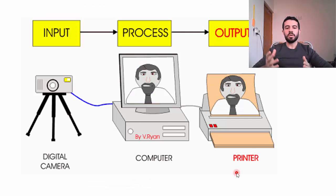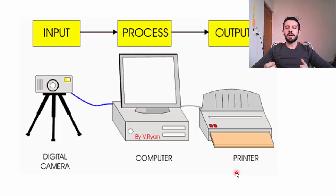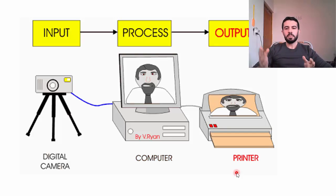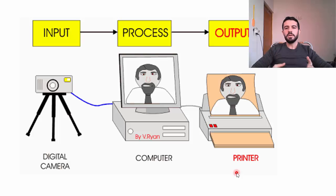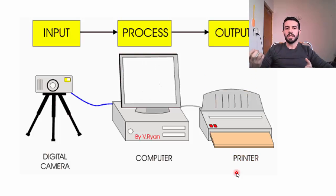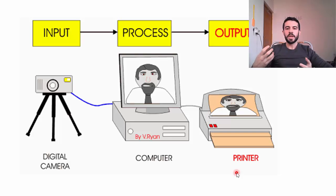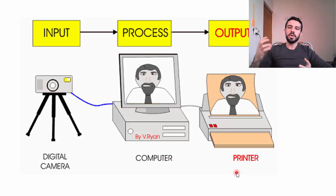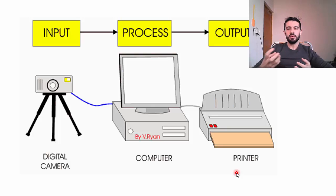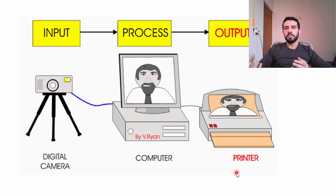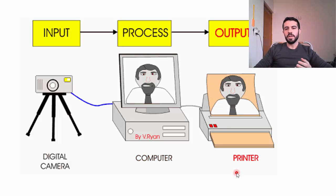In general, a system consists of three parts: input, process, and output. Input is anything inserted into the system; process means the operations the system applies to that input to change or address the data; and output is the result of the system.